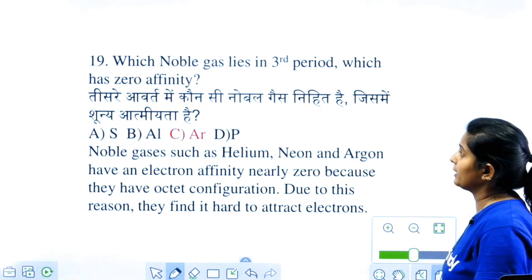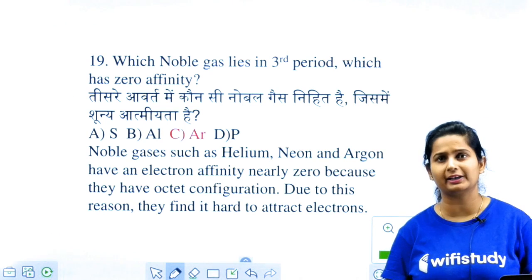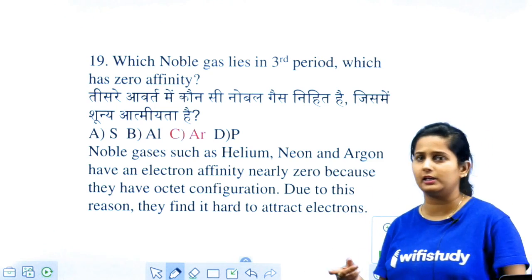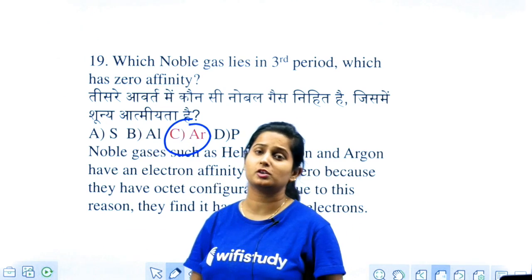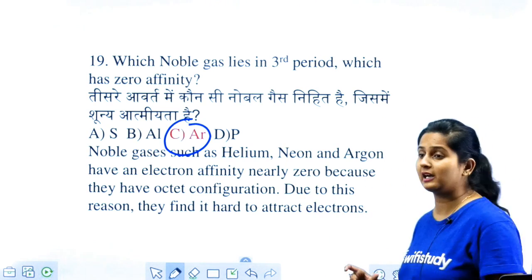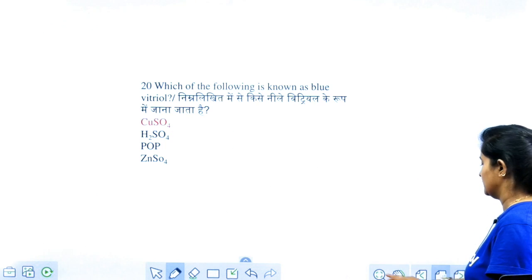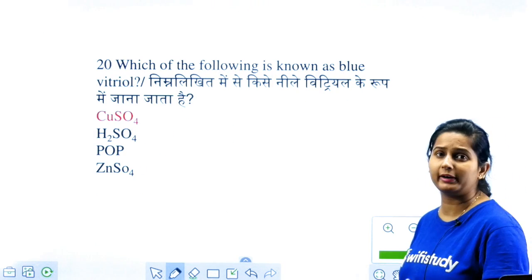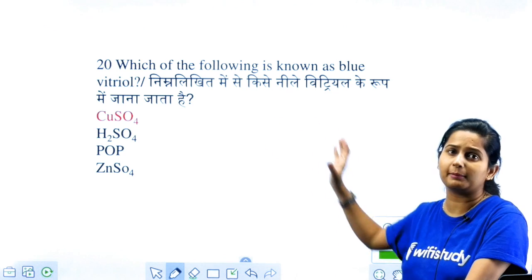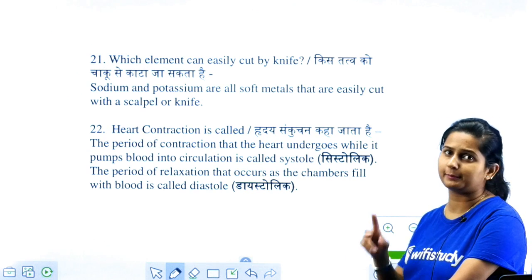Which element used in the third period has zero electron affinity? Noble gases have zero electron affinity. Among the options, the noble gas is argon. The noble gases are: Helium, Neon, Argon, Krypton, Xenon, Radon, and Oganesson. All of these have a full octet, so they don't bond. Blue vitriol is copper sulphate, CuSO4.